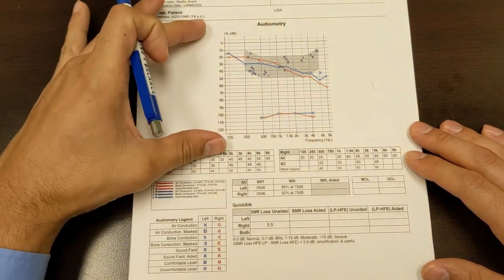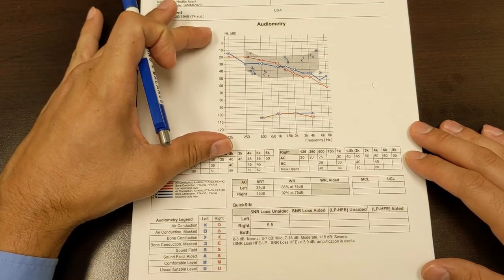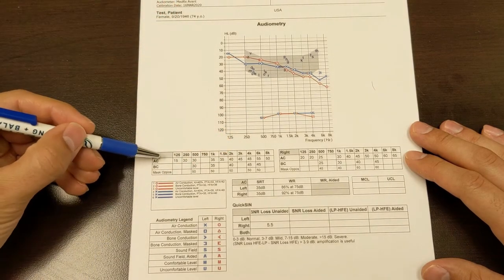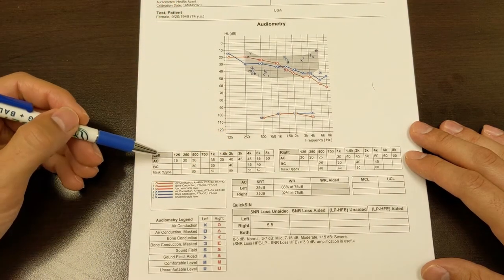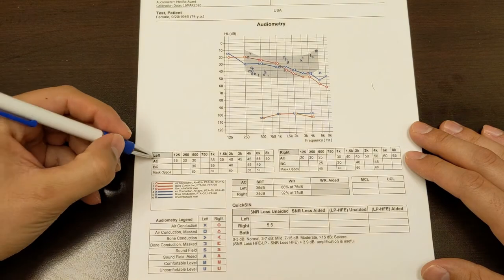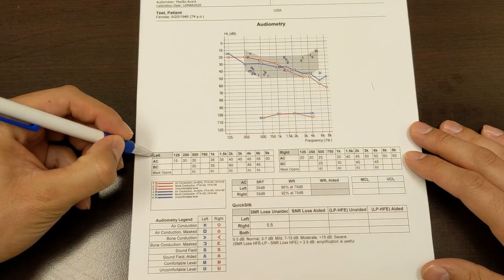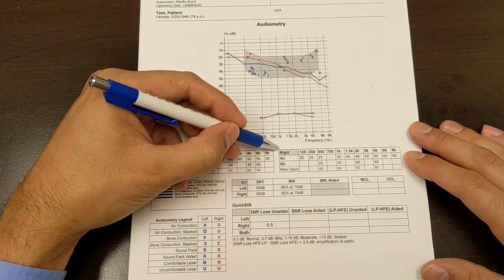So this graph is your audiogram. And the same thing is represented down here, just the numerical values. So if you see, this is the left side. And then over here, this is the right side.